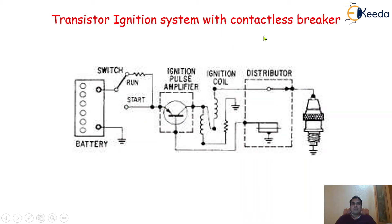In this diagram, there is no use of a breaker system. Instead of a breaker, we are using directly this particular switch. When the switch connects, the current is supplied from the battery to the transistor and from the transistor to the primary winding of the ignition coil.